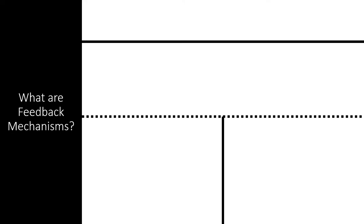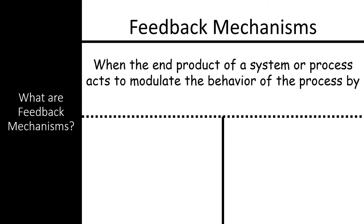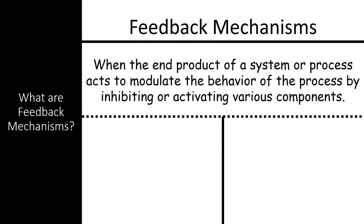Let's start by defining feedback mechanisms. Feedback mechanisms happen when the end product of a system or process acts to modulate the behavior of that same process by inhibiting or activating various components. There are two types of feedback mechanisms: positive and negative.